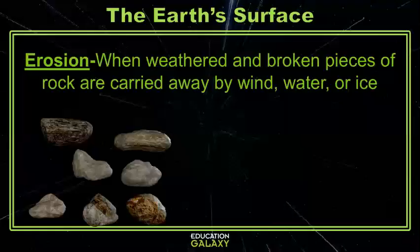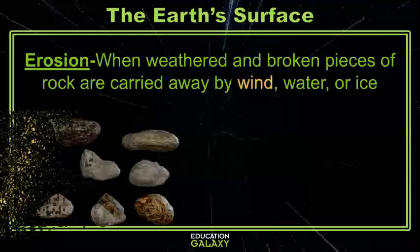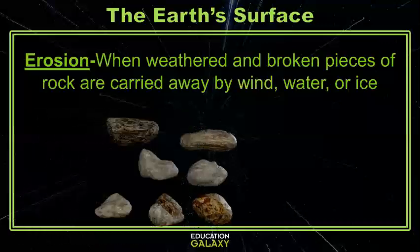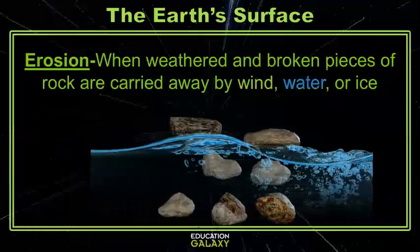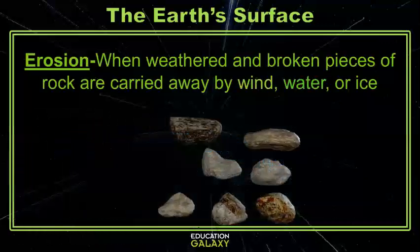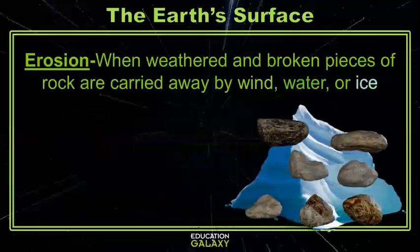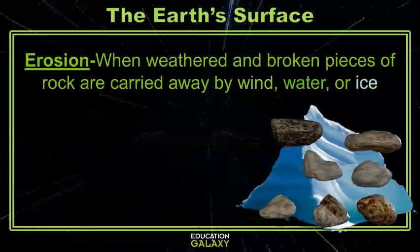Erosion is when wind, water, or ice carry off those broken, weathered pieces of rocks. Just like weathering, erosion can be caused by wind blowing the pieces away, water carrying the pieces away, or by ice in the form of glaciers pushing the pieces away.